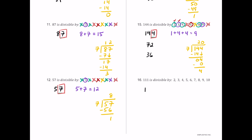For number 16, we have 111. It ends in 1, which is odd, so 2, 4, and 8 fail. Based on that, 6 and 10 also fail. The digit sum 1 plus 1 plus 1 is 3, a multiple of 3 but not 9. The last digit is 1, not 5 or 0, so 5 fails. For 7, dividing 111 gives a remainder of 6, so 7 fails. Only 3 works for 111.